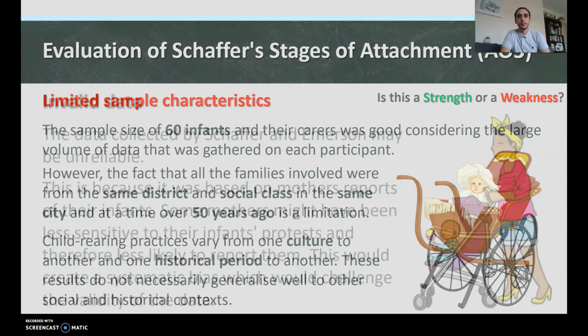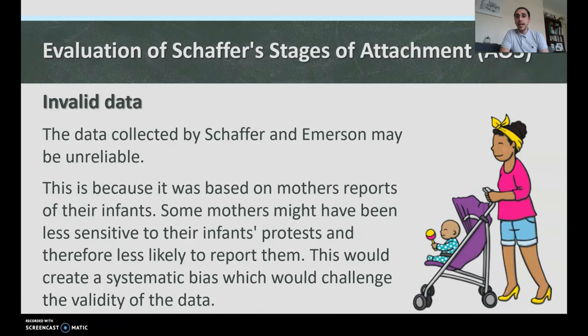A second potential issue is invalid data. The data collected by Schaefer and Emerson may be unreliable because it was based on mothers' reports of their own infants. Some mothers might have been less sensitive to their infants' protest and therefore less likely to report it. This would create a systematic bias and would challenge the validity of the data — social desirability bias means people may not have been honest or accurate, which challenges the validity of these stages.